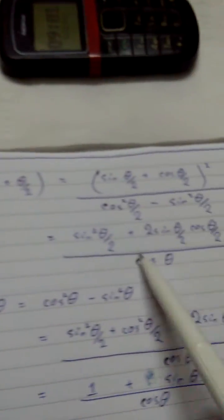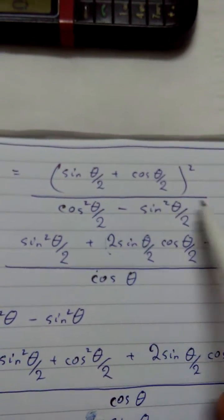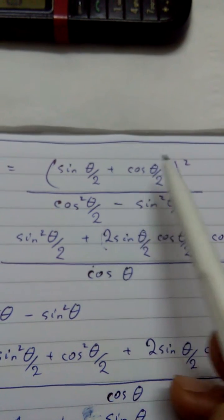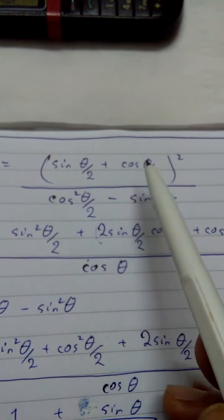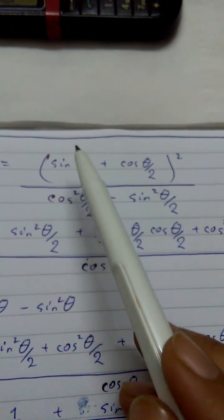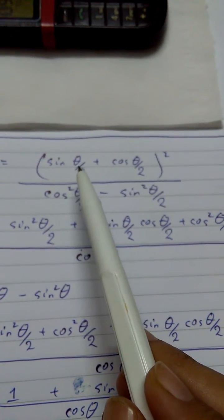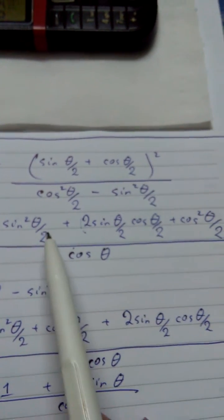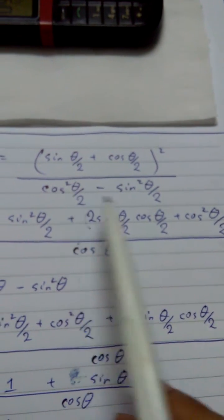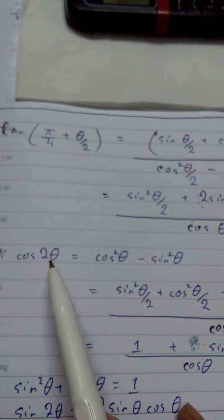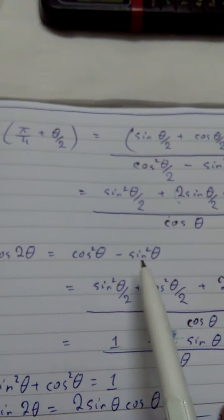That's what we have done. And in the numerator, once both the factors were the same, there comes the whole square outwards. So over here you just apply the formula of (a + b)² and it comes out to be this.